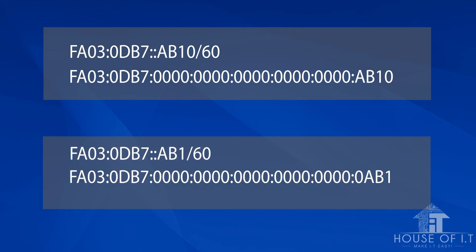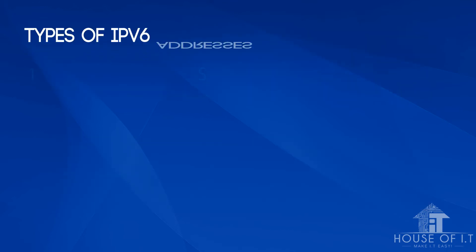Clearly, AB10 is not equal to 0AB1. Now let's move on to the types of IPv6 addresses.